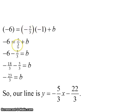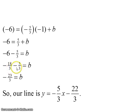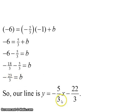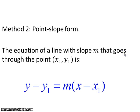Method 1: we plug everything into y = mx + b and simplify. Negative 5/3 times negative 1 is positive 5/3. Subtracting 5/3 from both sides to isolate b, we need a common denominator of 3: negative 6 becomes negative 18/3. So negative 18/3 minus 5/3 equals negative 23/3 — that's our b. Our equation in slope-intercept form is y = -5/3 x - 23/3.